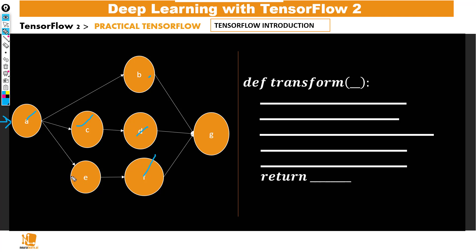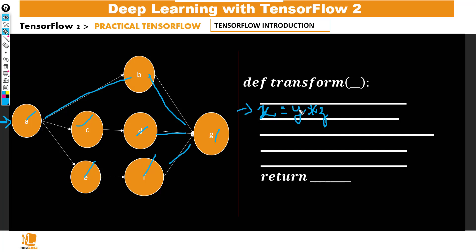These nodes are operations, so when we pass in our data — which could be a tensor — this data gets modified and then passed to the next node, right up to the output. For example, consider this line of code where we have x equal to y times z. TensorFlow is capable of converting this